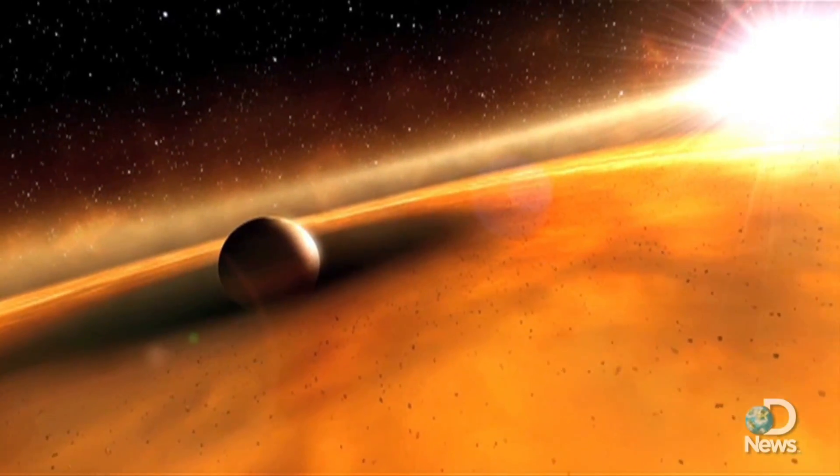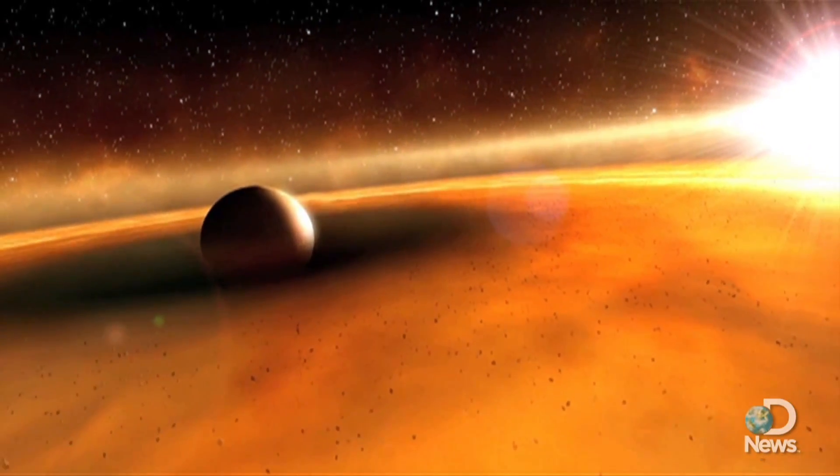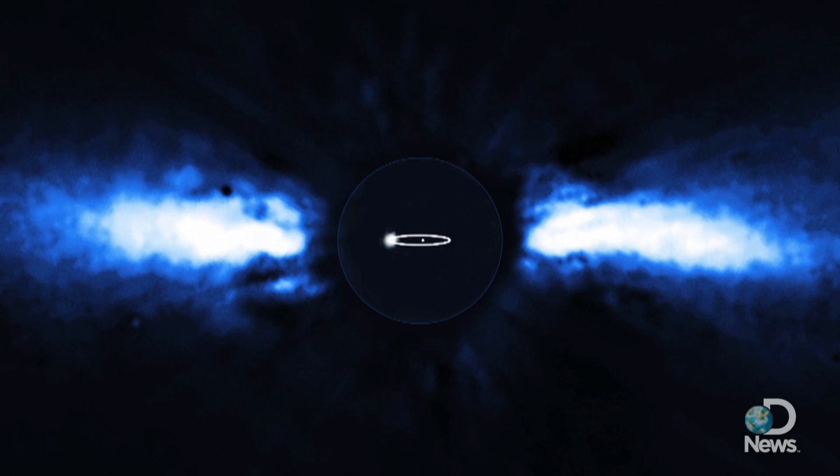That means these gas giants must form sometime in that window, according to the researchers. Astronomers made this discovery because for the first time ever, they were able to follow the motion of an exoplanet moving from one side of its host star to the other.